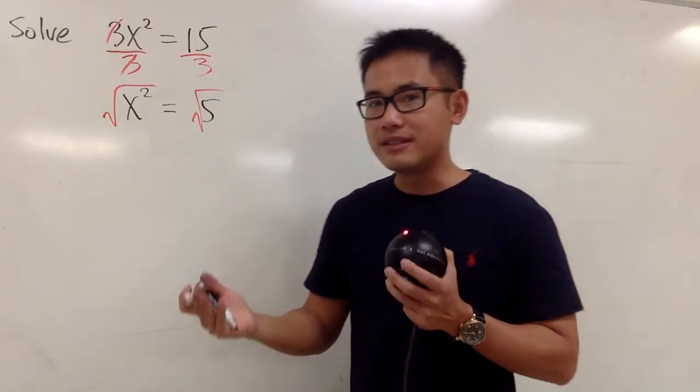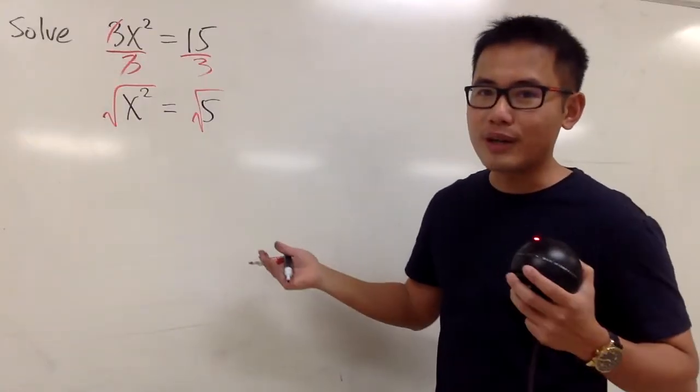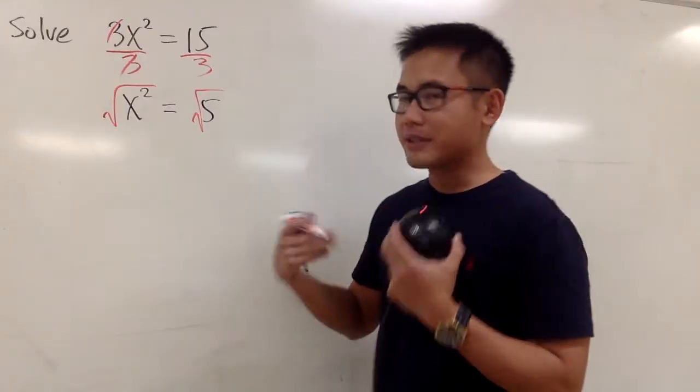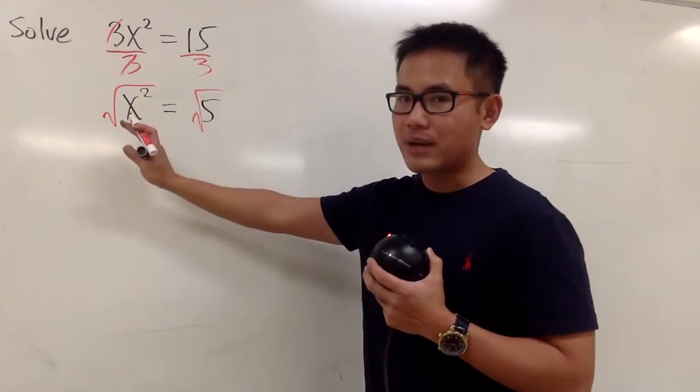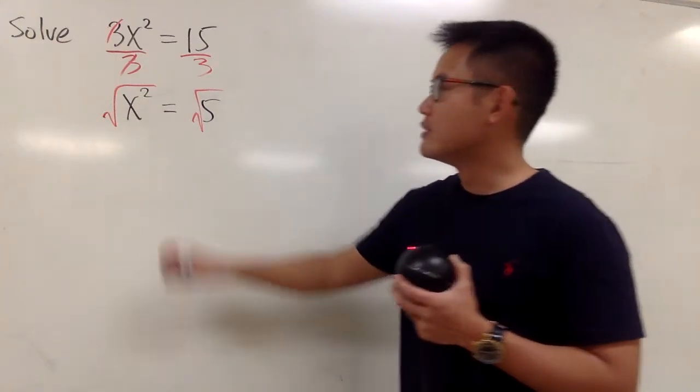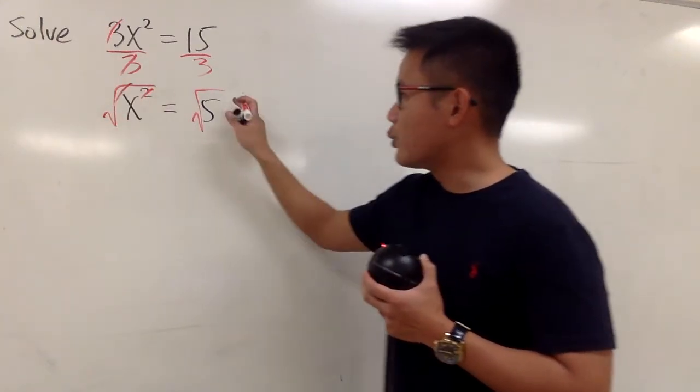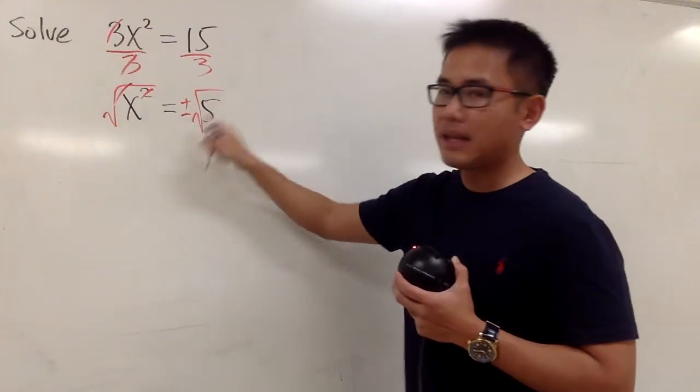And in this case, we are not talking about distance, we are not talking about the size of right triangles or things like that, we are not talking about time. This is just x, right? It can be positive or negative. So be sure, when you take the square root on both sides, you attach the plus-minus.